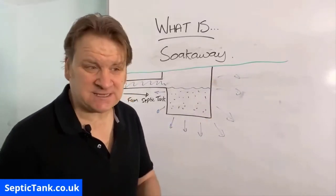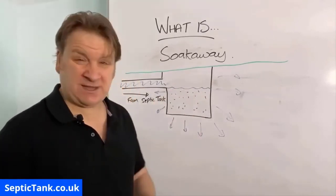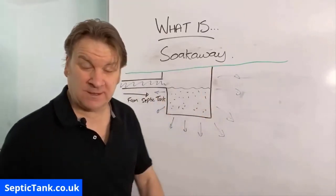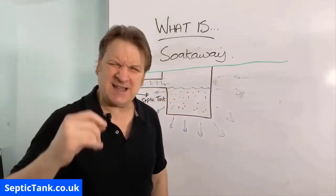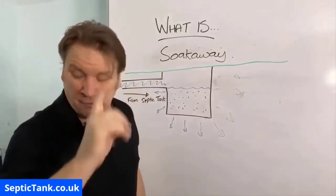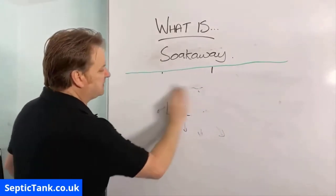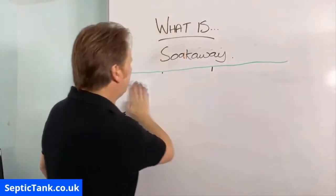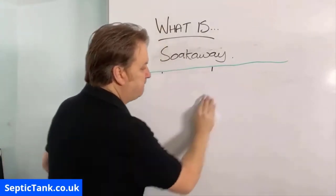The size of the soak away depends on the number of people using the septic tank - smaller for two people, much bigger for ten. It also depends on soil conditions. If you live on chalk or sand, the water soaks straight away - those are the best soak away mediums. If it's surrounded by clay, the soak away has to be a lot bigger, which is why there are different soak away designs - like the herringbone system.